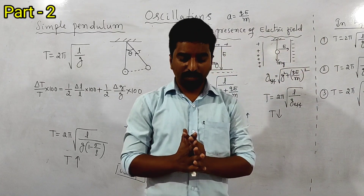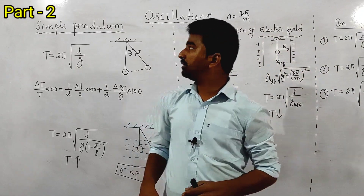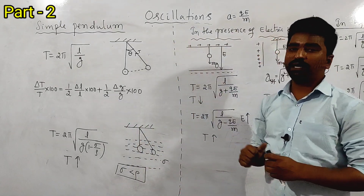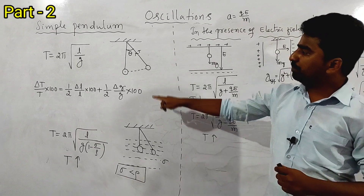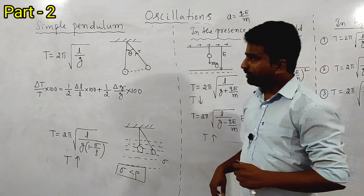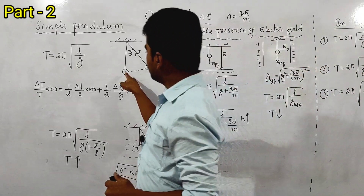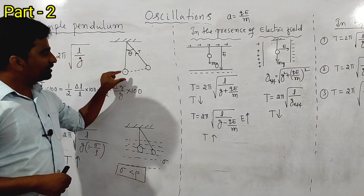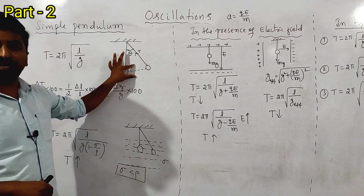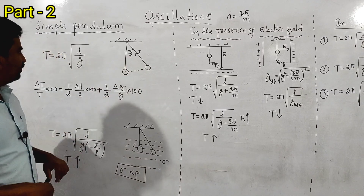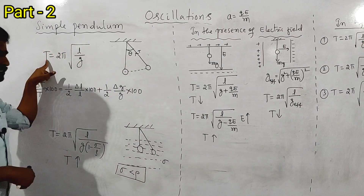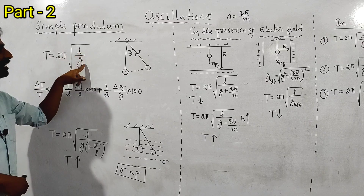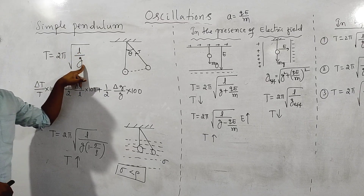Hello dear students. The next concept from the chapter oscillation is the time period of a simple pendulum. Note this is the simple pendulum, oscillated with some amplitude A. The time period of the simple pendulum is given by 2π√(L/G).